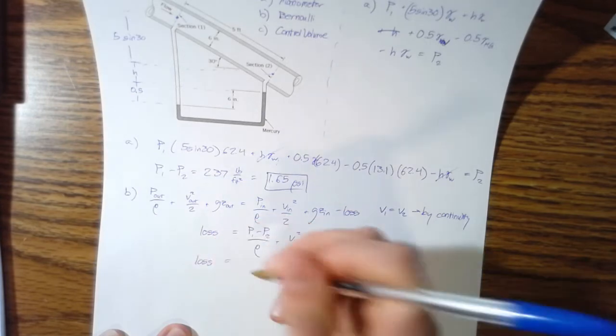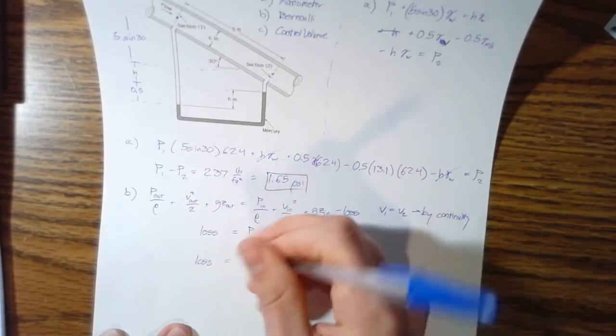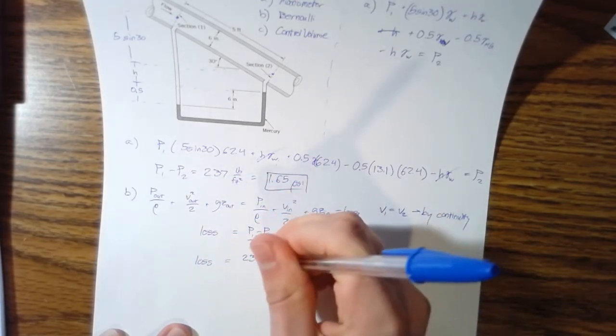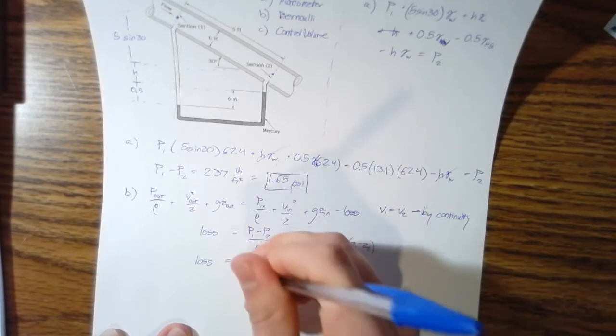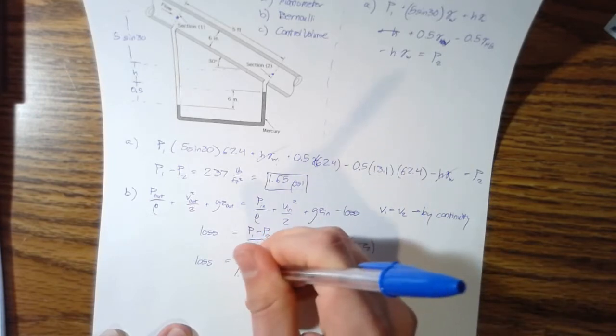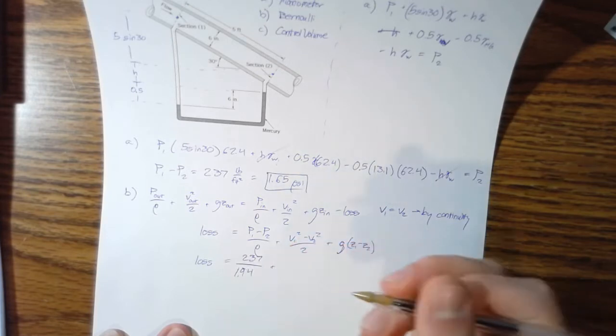So our loss, so difference in pressure, 237 pounds per foot squared, density of water is 1.94 slugs per foot cubed. The difference between the velocities is zero.